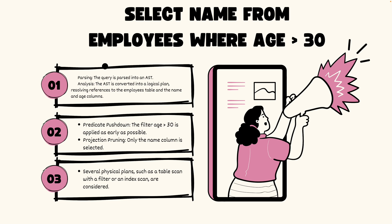Let's take an example. Say you have a query: SELECT name FROM employees WHERE age > 30. First, this query is parsed into an abstract syntax tree and converted into a logical plan where the reference to the employees table and the columns name and age are resolved. Then predicate pushdown happens — the filter age > 30 is applied as early as possible — and only the name column is selected as output, which is projection pruning. Then several physical plans, such as a table scan with a filter or an index scan, are considered and the one with the optimized cost is selected. Finally, that plan is converted into bytecode for Spark to execute.